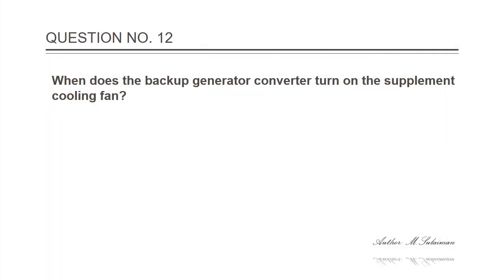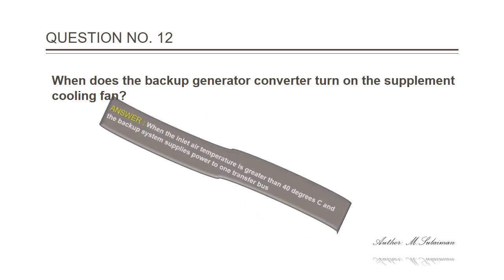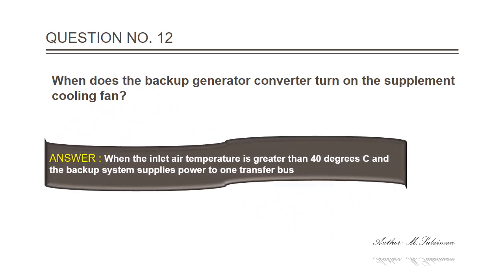Question 12: When does the backup generator converter turn on the supplement cooling fan? Answer: When the inlet air temperature is greater than 40 degrees centigrade and the backup system supplies power to one transfer bus.